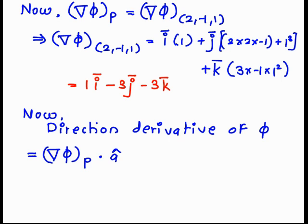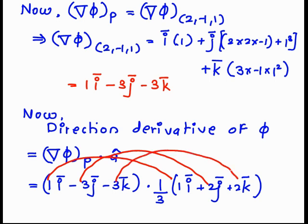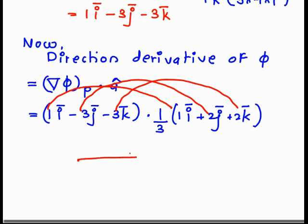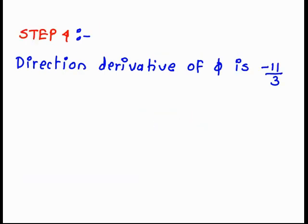The directional derivative of phi = del phi at P · â. Taking the dot product: 1×1 = 1, (-3)×2 = -6, and (-3)×2 = -6. Simplifying: (1/3)(1 - 6 - 6) = -11/3. Therefore, the directional derivative of phi under the given condition is -11/3.